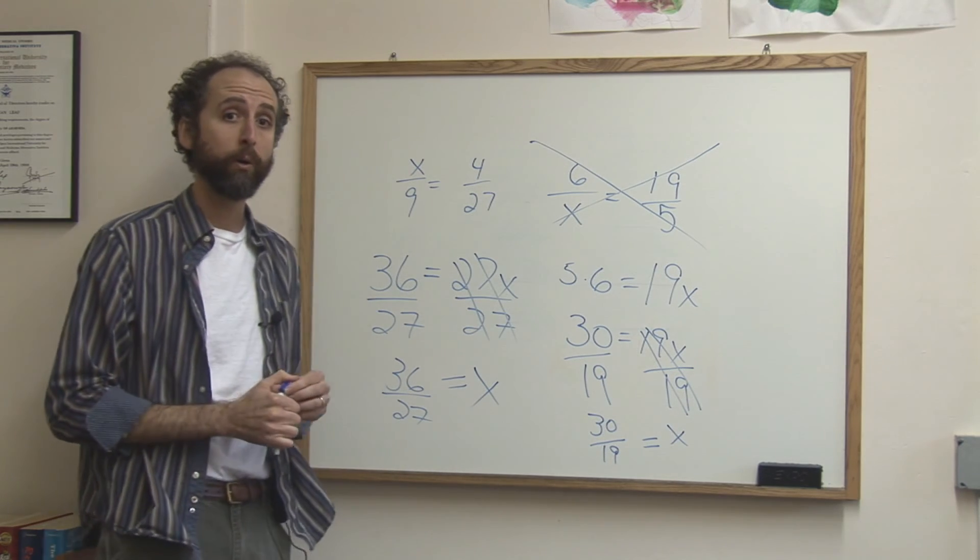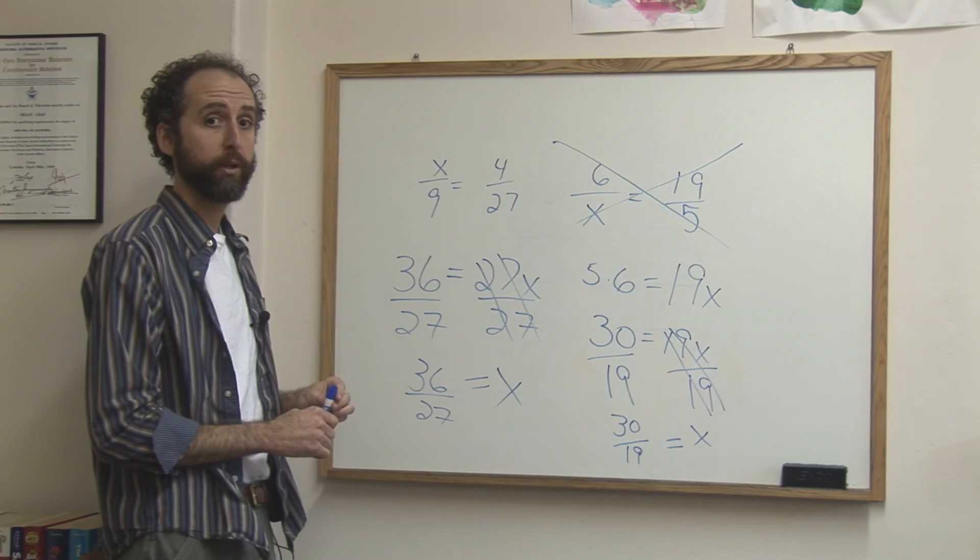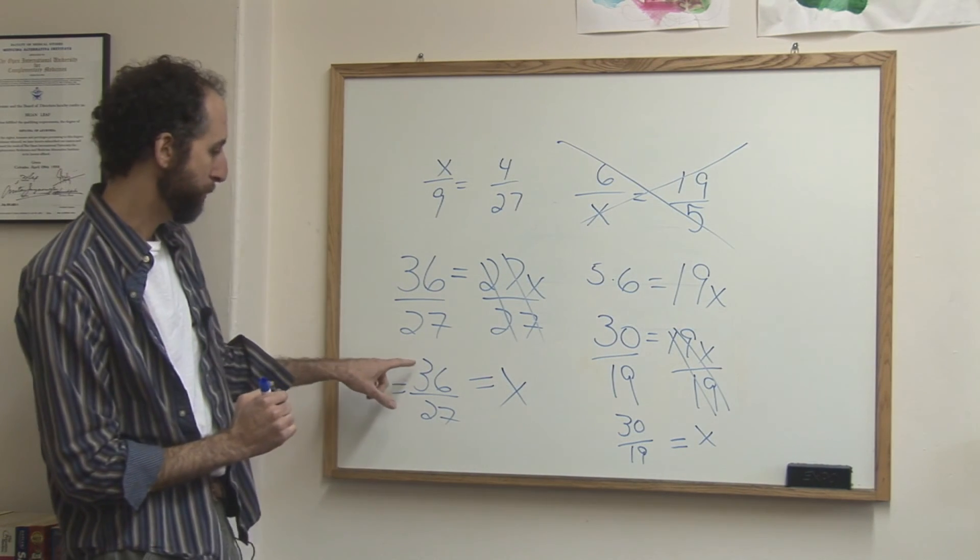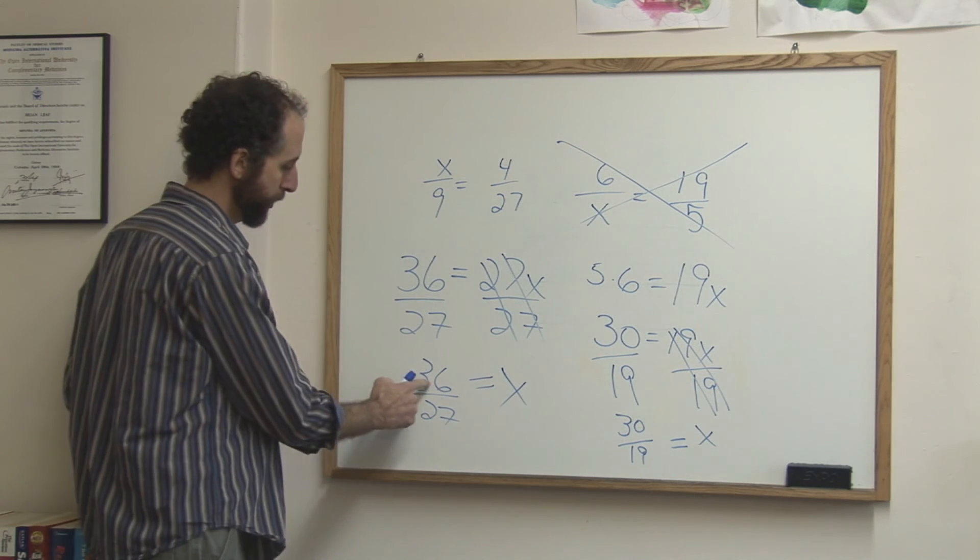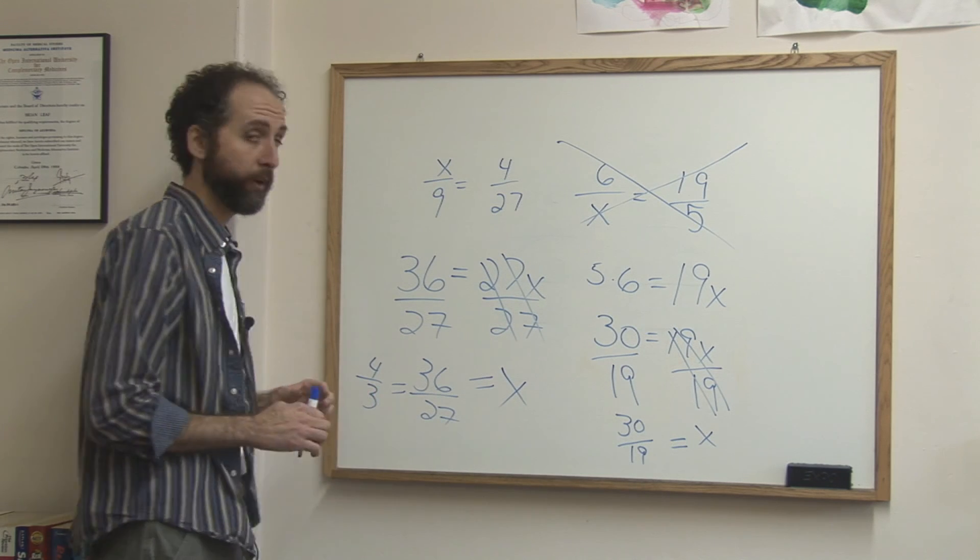Again you can leave that as is, or you can get a decimal. Also with a number like this that reduces, it's not a bad idea to reduce. If you wanted to reduce this, you could divide the bottom and the top by 9. So 36 divided by 9 is 4, 27 divided by 9 is 3, final answer 4 thirds.